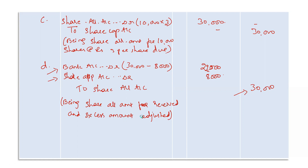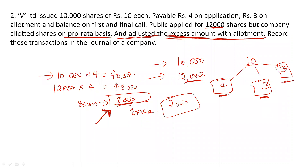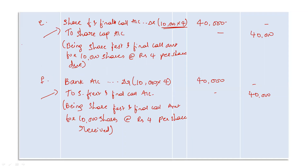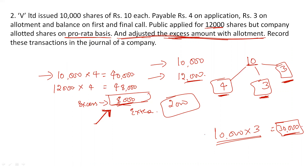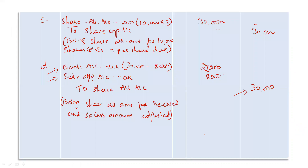The first and final call entries for the second problem are the same structure as in problem one, with only the amount changing. Company asks for 3 rupees on first and final call, so for 10,000 shares that is 30,000 rupees. You need to do the asking entry and the receipt entry yourself, as the format follows the same pattern already demonstrated.